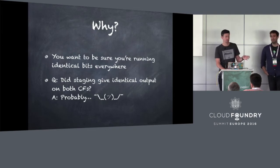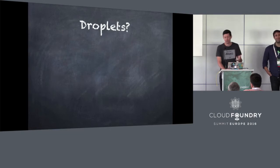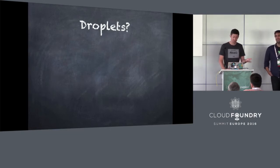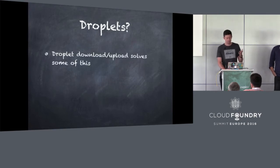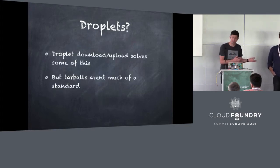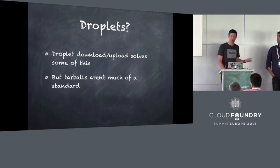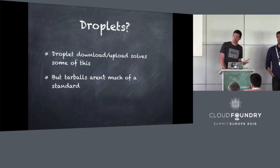If you went to the Cappy talk yesterday about the V3 API, you might be thinking: what about droplets? We're going to get droplet download and droplet upload, and that will kind of solve this. But it only solves it for Cloud Foundry - it doesn't solve it for other platforms. These tarballs aren't much of a standard; it's just an arbitrary tarball full of stuff that you can run. If I want to pull it down and run it on my local machine, I've got to untar it and figure it out, and I probably just want to run a container.